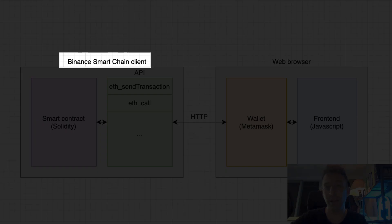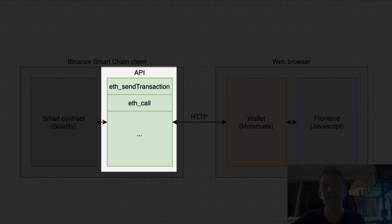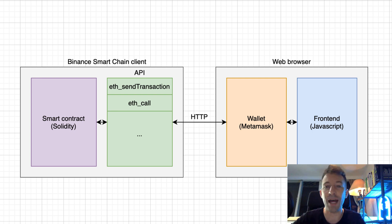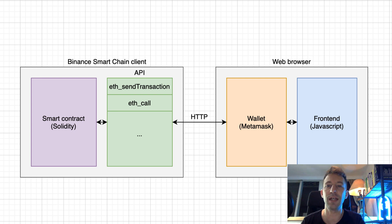The software that runs the Binance Smart Chain is called a client. The client exposes the smart contract functionality with an API. In this API there are several endpoints. For interacting with our smart contract, we will use two endpoints: eth_sendTransaction to modify data, and eth_call to read data from the smart contract. On the front-end, we will have a web page with HTML, CSS and JavaScript — this is the JavaScript code that will interact with the smart contract.